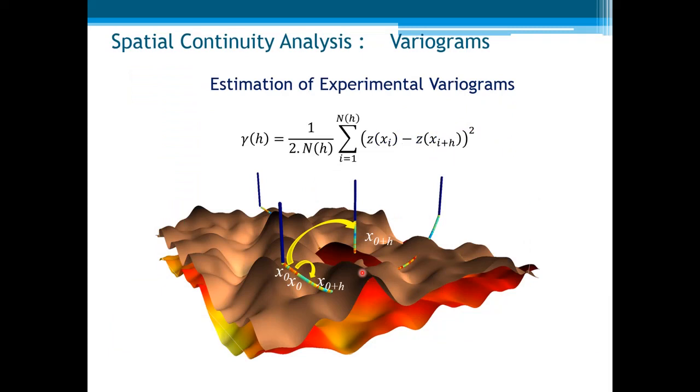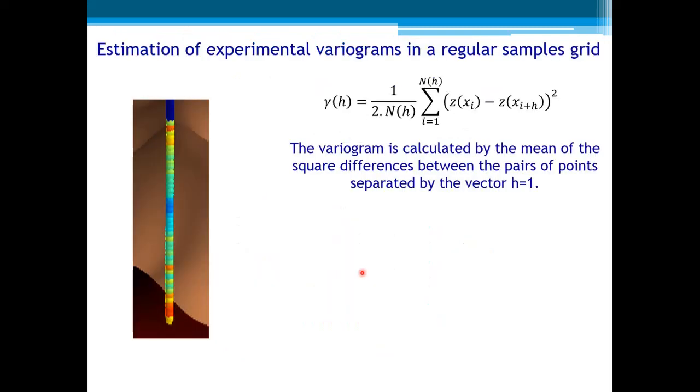Now we'll see a more practical way of direct calculation of variograms. Take again the case of our well, where the samples are regularly spaced. We can directly compute the variogram values for h equal one, which is the mean of all pairs of continuous values. And this is the resulting variogram for h equal one.